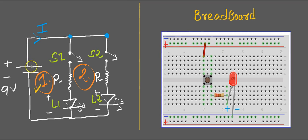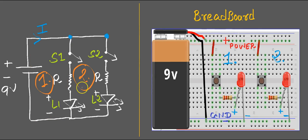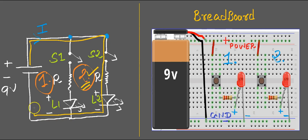This is path number 1 — the current flows from positive to negative through switch 1, resistance, and LED 1. So connect switch, resistance, and LED for path 1 first. That way you complete path number 1, then connect path number 2. This is path number 2: the current flows through switch number 2 from positive to negative — switch, resistance, LED.